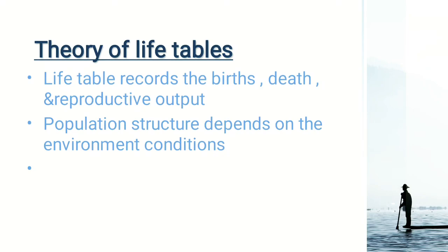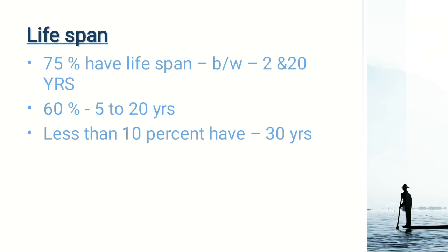We expect that the growth rate of a particular species and the mortality rate are known. The life table is important for fish populations. It records birth rate, death rate, and reproductive output. The population structure depends on environmental conditions, which vary across life stages — for example, populations may have different survival rates across age classes such as 2 to 20 years at 60%, 5 to 20 years at less than 10%, and a life span of up to 30 years.